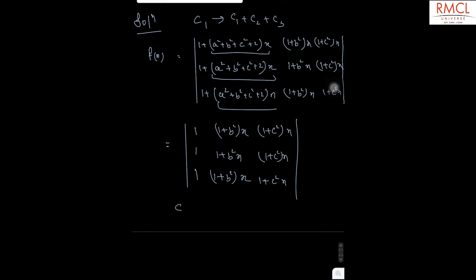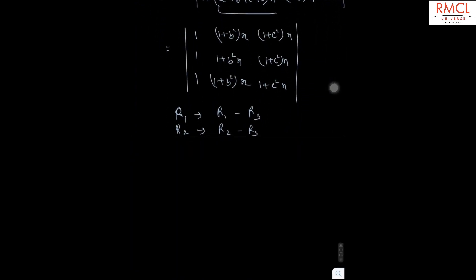Now, if you replace R1 with R1 minus R3, and R2 with R2 minus R3, the determinant becomes: row 1 has 0, 0, (x-1); row 2 has 0, (1-x), (x-1); and row 3 has 1, (1 + b²x), (1 + c²x).